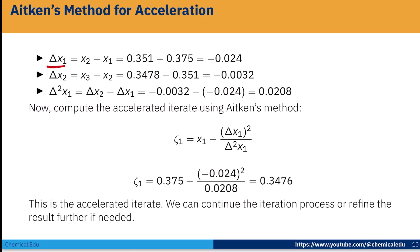Now here, first difference Δx_1 is x_2 - x_1 = 0.351 - 0.375 = -0.024. Δx_2 means x_3 - x_2 = 0.3478 - 0.351 = -0.0032. Now second difference, Δ²x_1 is Δx_2 - Δx_1 = -0.0032 - (-0.024) = 0.0208.